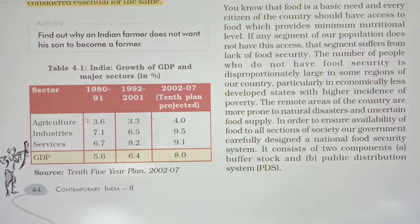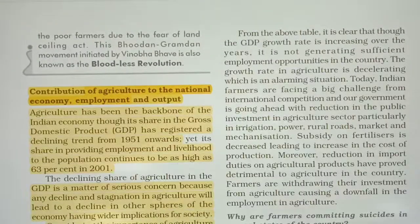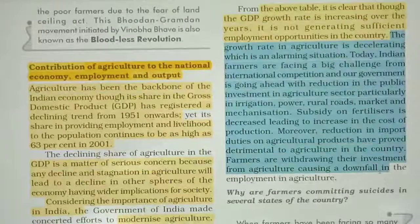From the table, in 1980 the share of GDP growth in the primary sector was 3.5-3.6, secondary and tertiary shown separately. In 2002-07 it shows 9.1 for services, while in the present time the service sector is at the top and the primary sector is only around 4%. Though the GDP growth rate is increasing over the years, it is not generating sufficient employment opportunities.